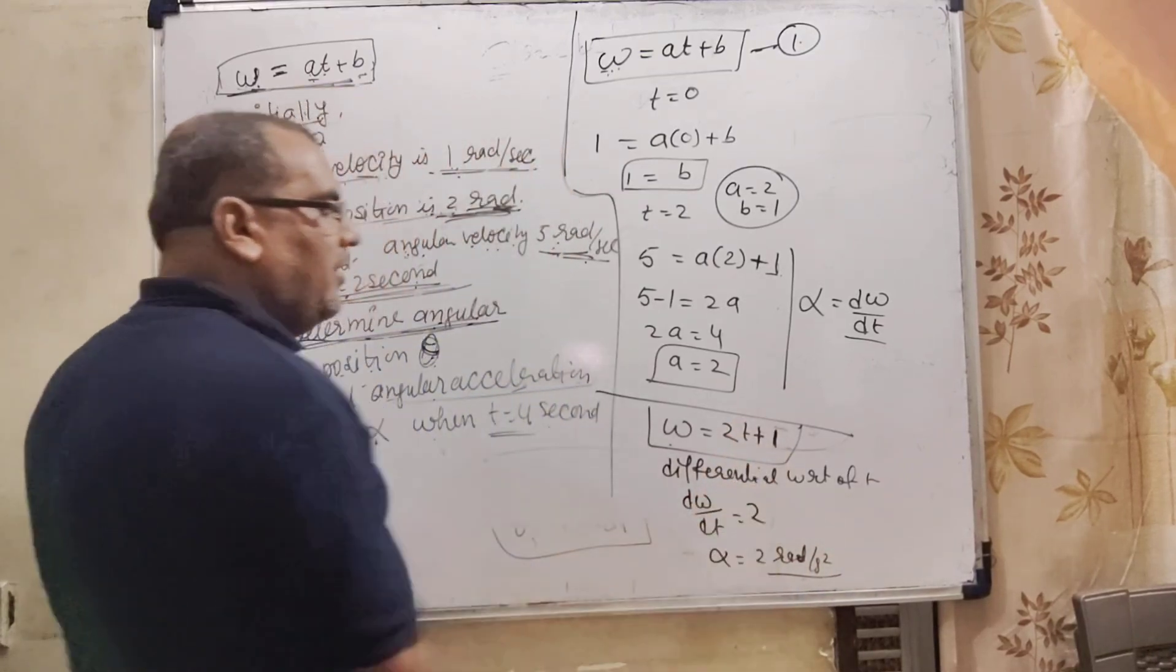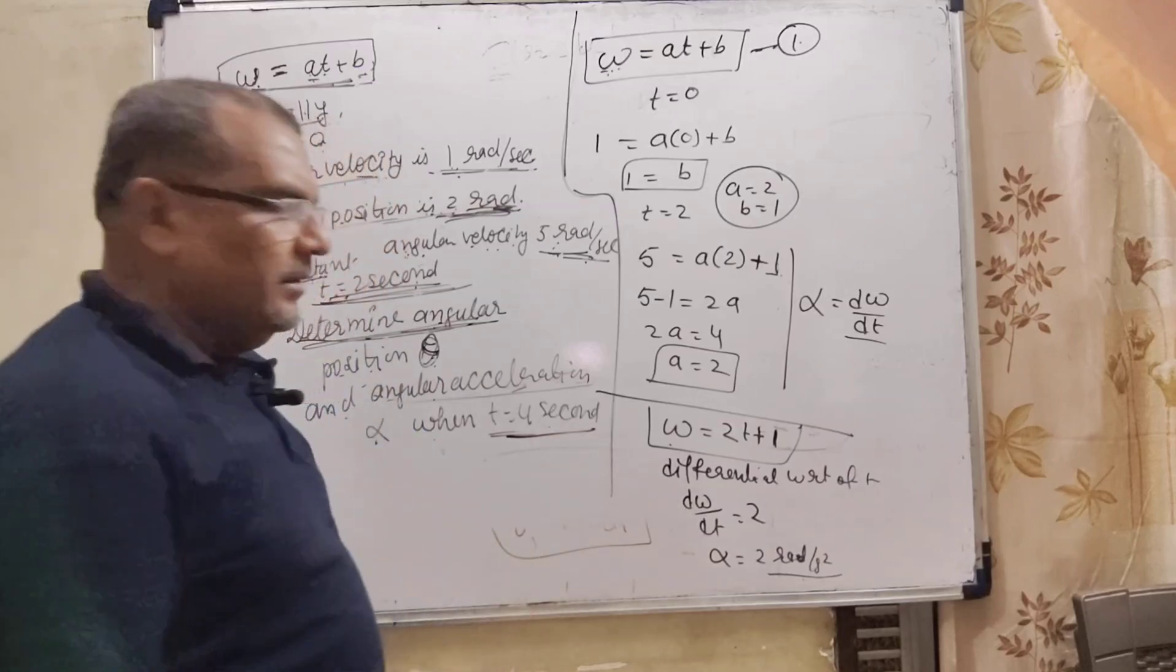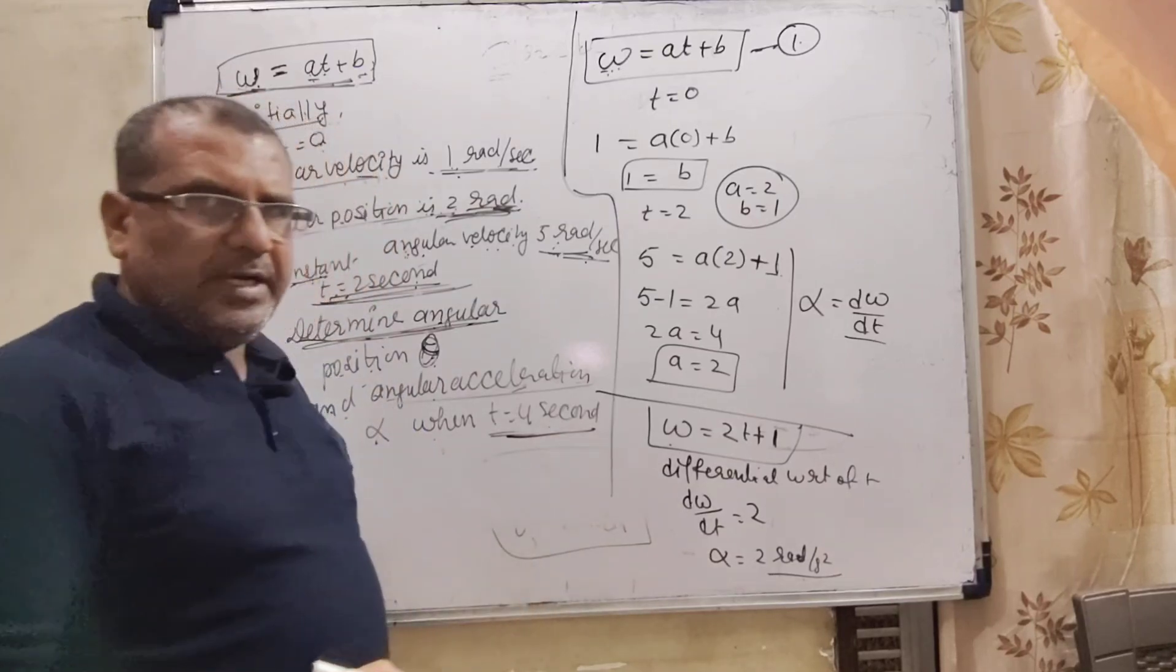That is alpha equals 2 radian per second square. So here it is independent of t. So therefore, the same value for the 4 seconds. Alpha equal to 2 radian per second square.